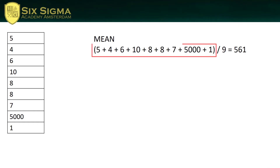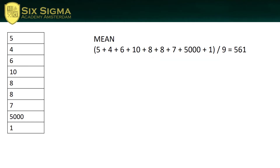Add these values up — which is what we did here — then divide them by the number of observations. We have data about nine players, so we have nine observations. We divide everything by nine, which means that on average the player spent $561. The mean is $561.